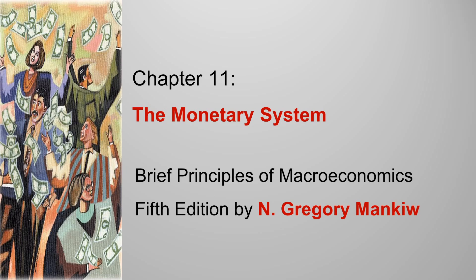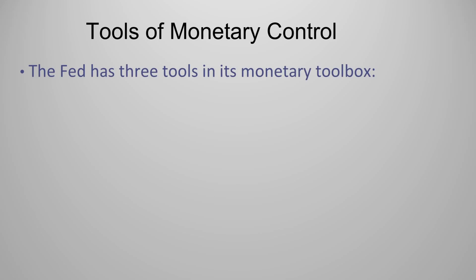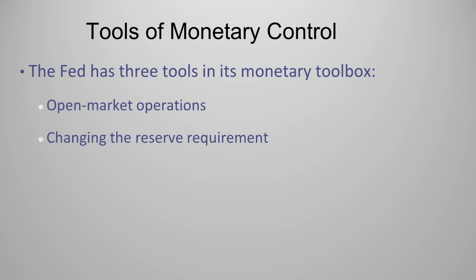In this part, we will discuss the tools of monetary control. There are three tools, and the central bank can use these tools to increase or decrease money supply in an economy. The Fed has three tools in its monetary toolbox: the first is open market operations, changing the reserve requirement, and finally, changing the discount rate.